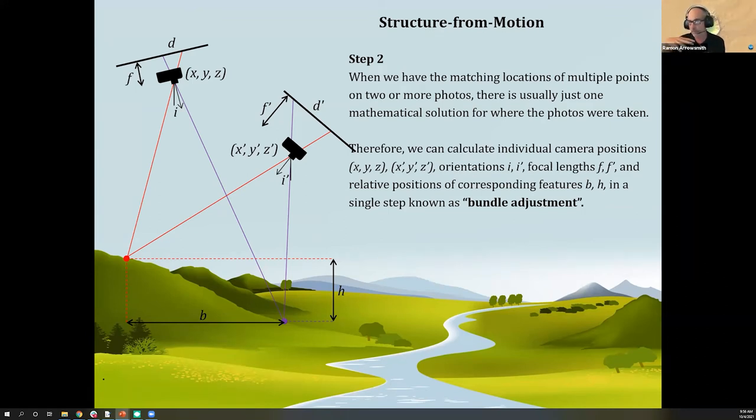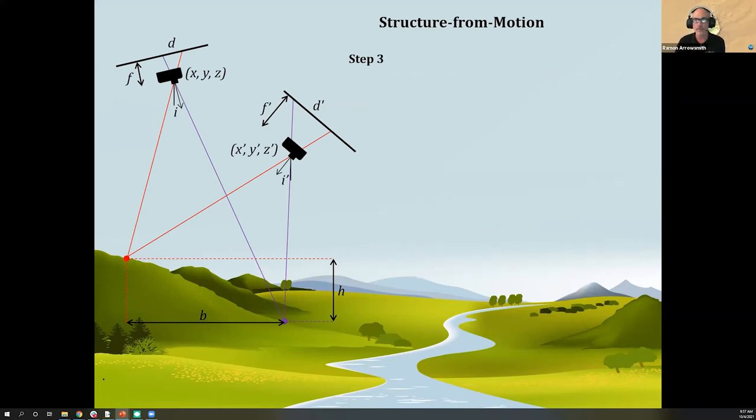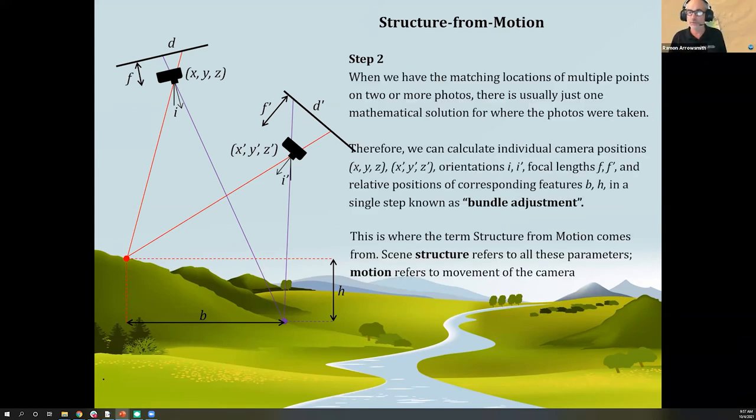The key point is it's determining these B and Hs, the points on the ground, as well as all this information about the cameras. You can see why it would be interesting for a robot, because you might care more about the robot position, the camera position, than about your environment. We mostly care about the environment, the target. The structure is all the parameters. The motion is the movement of the camera or all the pictures around the target. One key point: step two produces something called the sparse cloud. Sparse cloud is the points that come from this step. They're the most important key points, but there's not a huge amount of them, but they're in the scene. That would be the collection of all these red and purple dots.